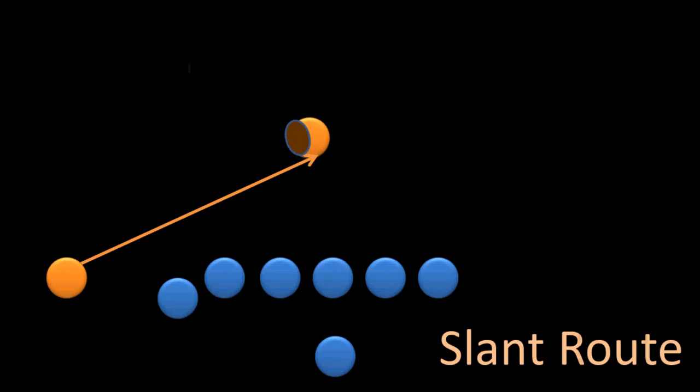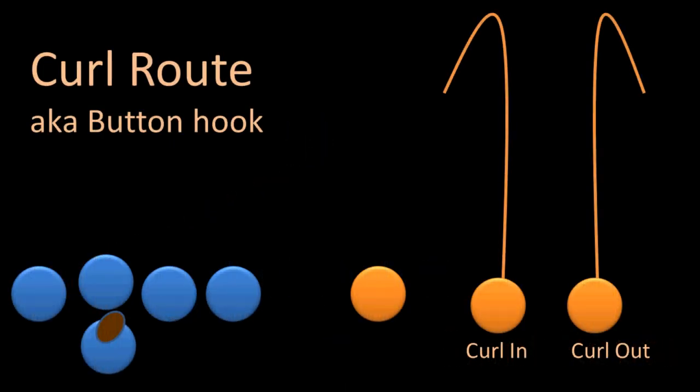Next is the curl route, which is also called the hook, or the button hook. And as you can see, it means the receiver will run forward and turn around. How far the receiver will run forward may vary. It might be 5 yards, it might be 15, or it could be any distance.